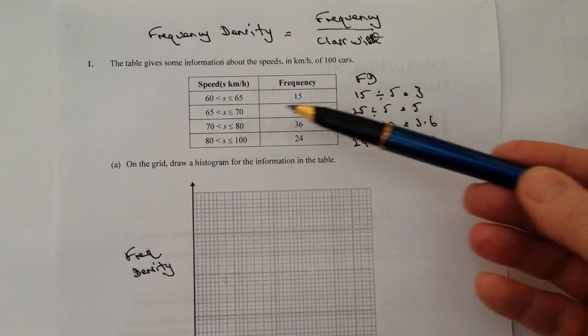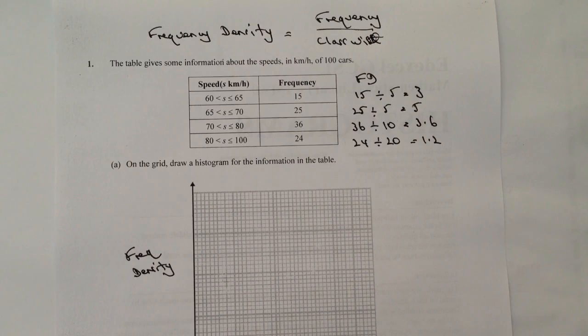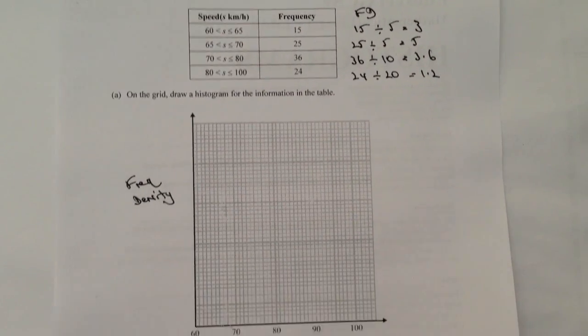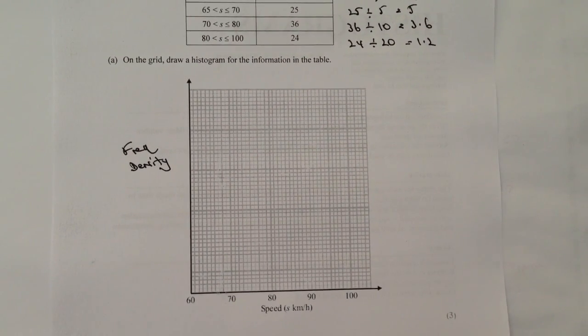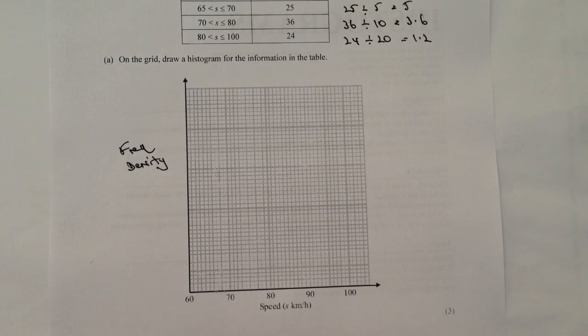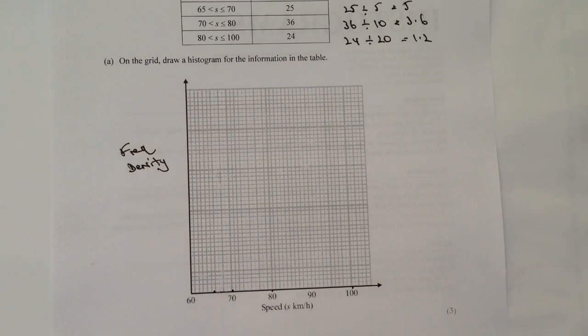So there I've got my four frequency densities that I'm going to plot against the class widths that I have. So if I just move this up a little bit, I hope this is going to come across okay on the video. Here you can see I've got 60 to 65, and then it's going to go from 65 to 70, 70 to 80, and then 80 to 100, which is my class widths.